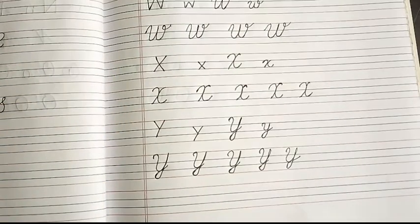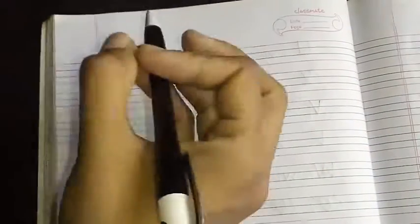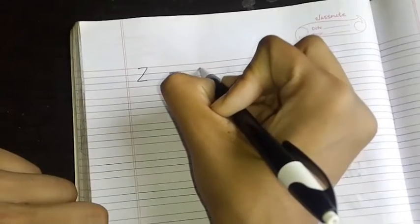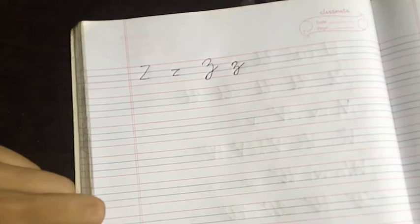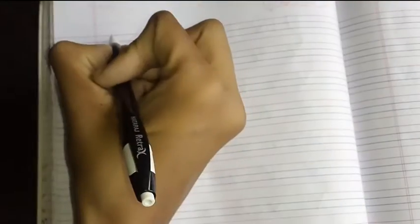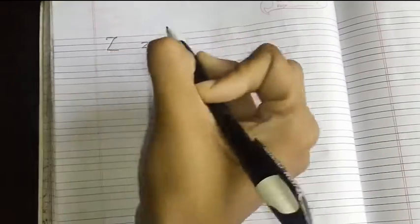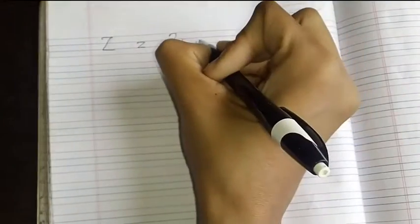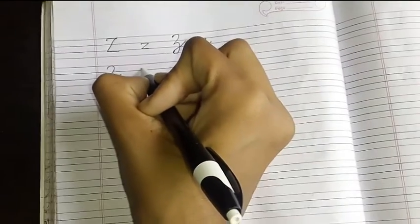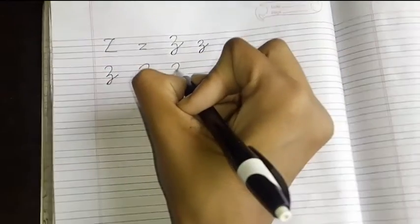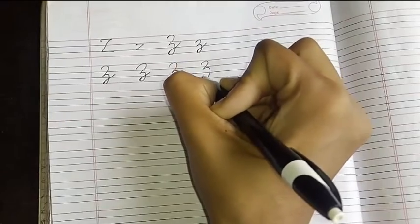So we practiced U, V, W, X, Y. Which is the last letter? Yes, letter Z. Let's practice that. Print capital, print small, cursive capital, cursive small. Let's begin writing letter Z. You will be practicing cursive capital like this.